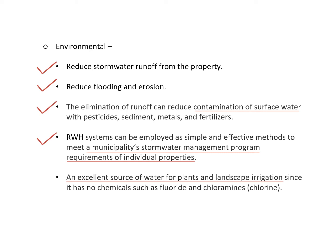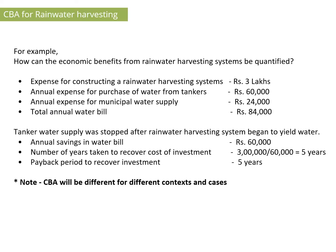The system meets a municipality's storm water management program requirements for individual properties, and it is an excellent source of water for plants and landscape irrigation. Now let's talk about cost-benefit analysis. This is just an example and it will be different case to case — for example, how can the economic benefits from a rainwater harvesting system be quantified?